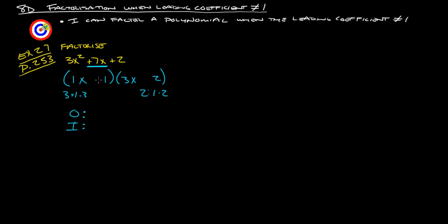So, multiply the outside together. We've got to put our signs in here. The positives tells us that the signs are the same, and this positive tells us that they're both positive. So, we check the outsides together. 1 times 2 is 2x. Check the insides. 1 times 3x is 3x. Add those together, and we get 5x. We wanted 7x. We got 5x, so we know that these are not the right factors.